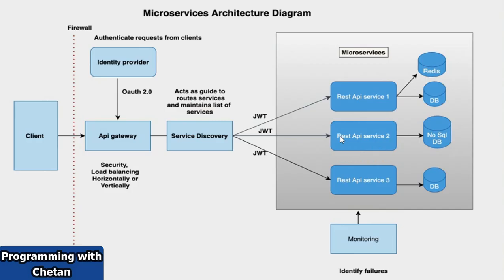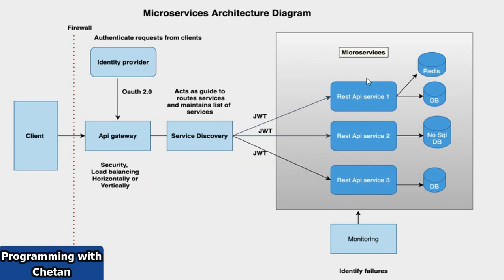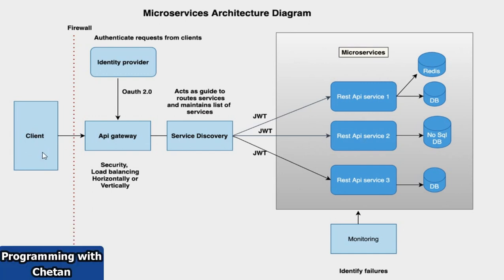Let us understand microservice architecture in more detail using a banking application example. In my banking application, I can have one service for account service, a second for user service, and a third for payment service. Our client is a customer of the banking application — either a mobile user or a web application user. The client wants to access their account to do some transactions, so they send a login request.